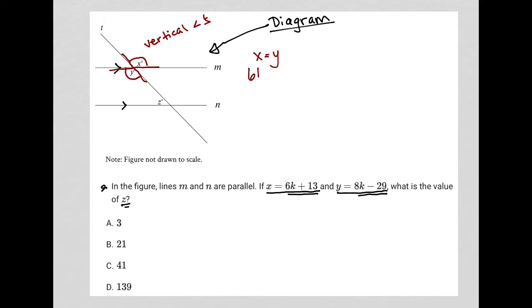So X will equal Y because of that. So because X equals Y, I could say that 6K plus 13 is equal to 8K minus 29. I can now solve for K by combining like terms. So I can subtract 8K from both sides of the equation and I can subtract 13 from both sides of the equation as well.